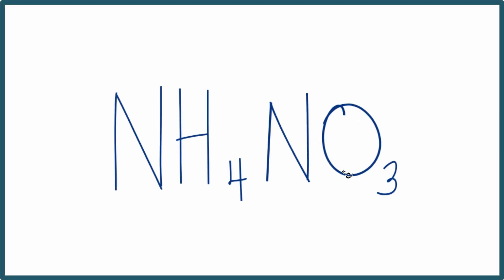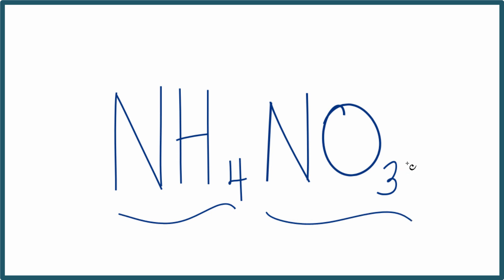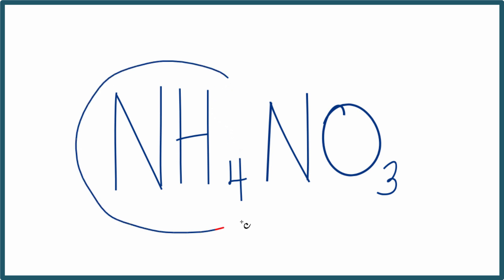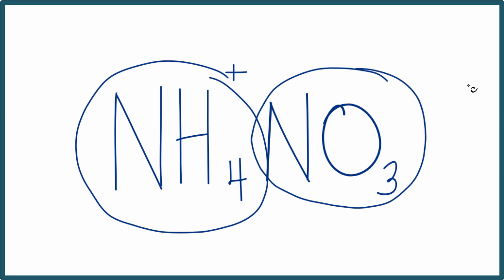Let's figure out how many ions we have in NH4NO3. This is ammonium nitrate. When we look at ammonium nitrate, we need to recognize that we have two polyatomic ions here. We have the ammonium ion, NH4 — that whole thing ends up being one plus. And then over here we have the nitrate ion, which is also a polyatomic ion, and the whole nitrate ion is one minus.